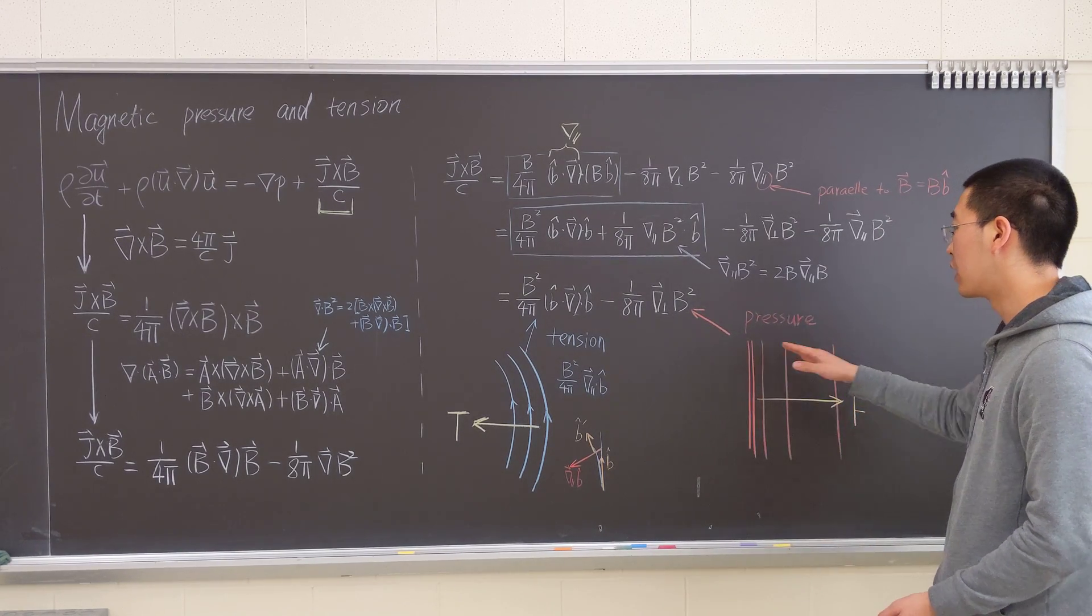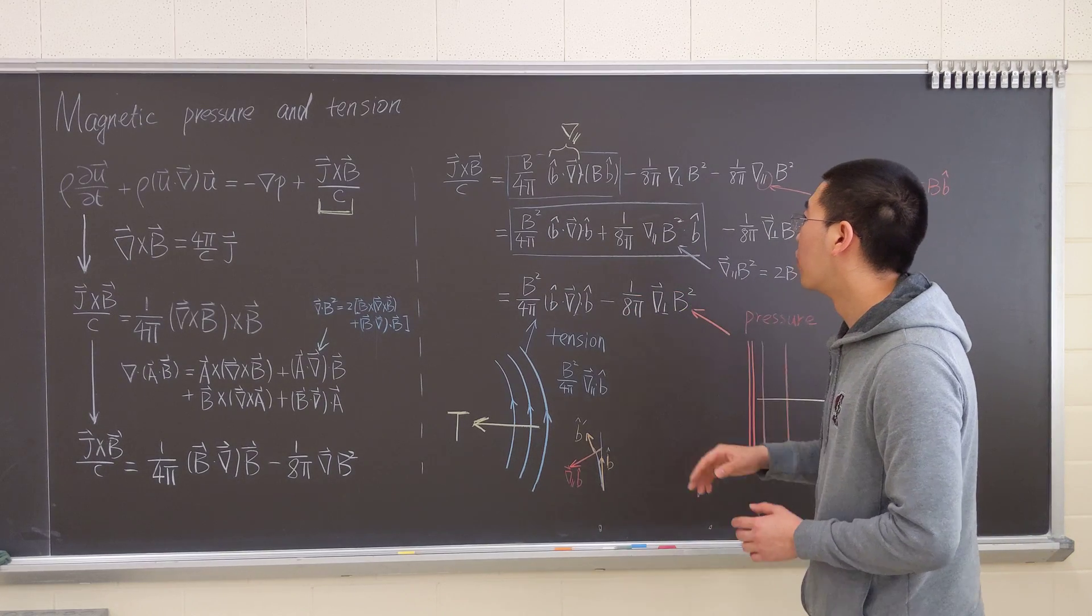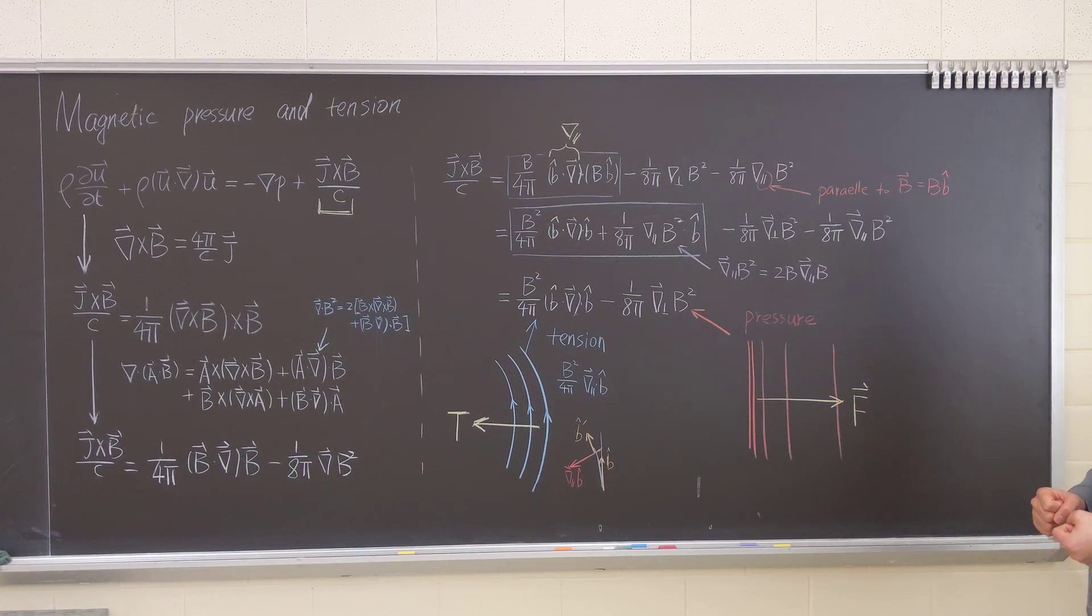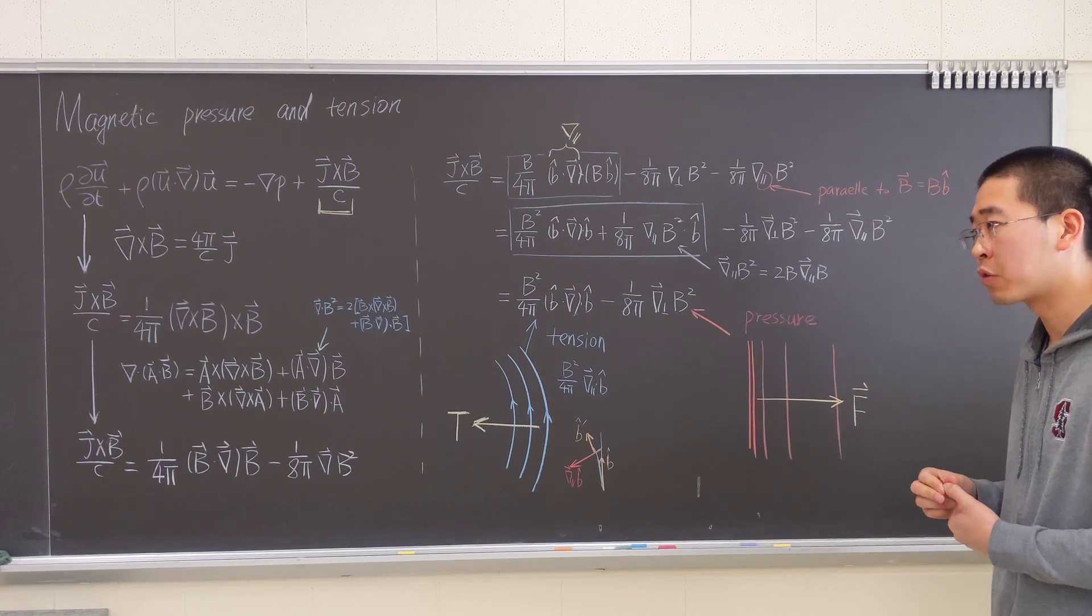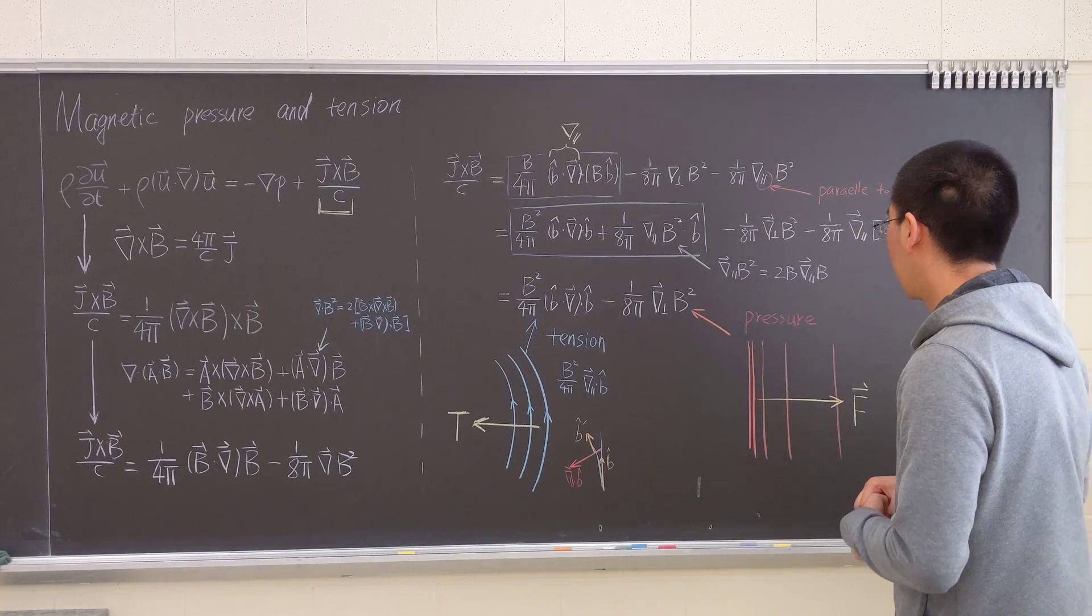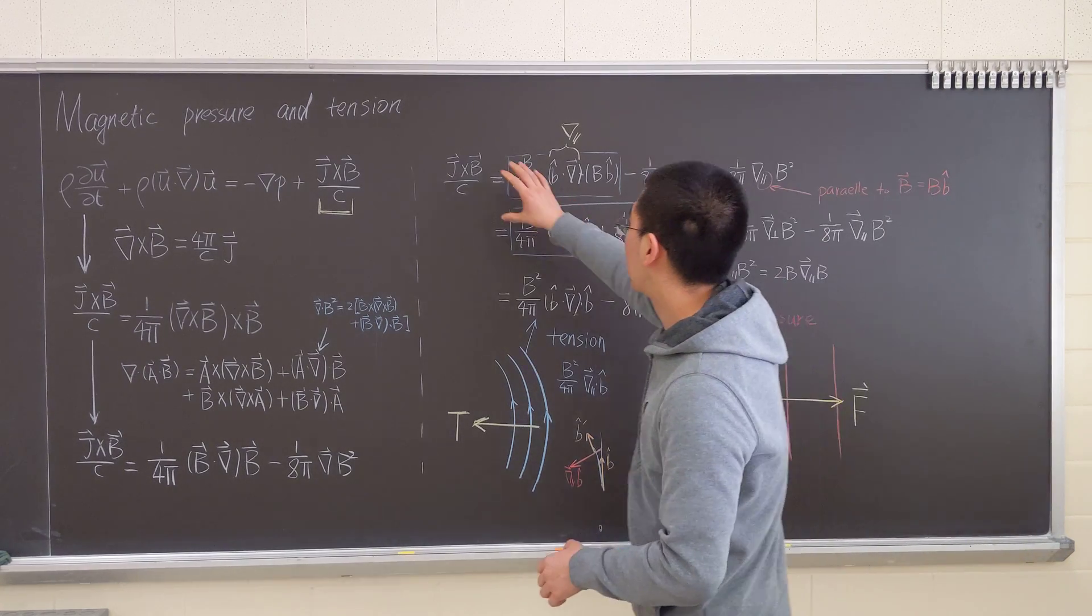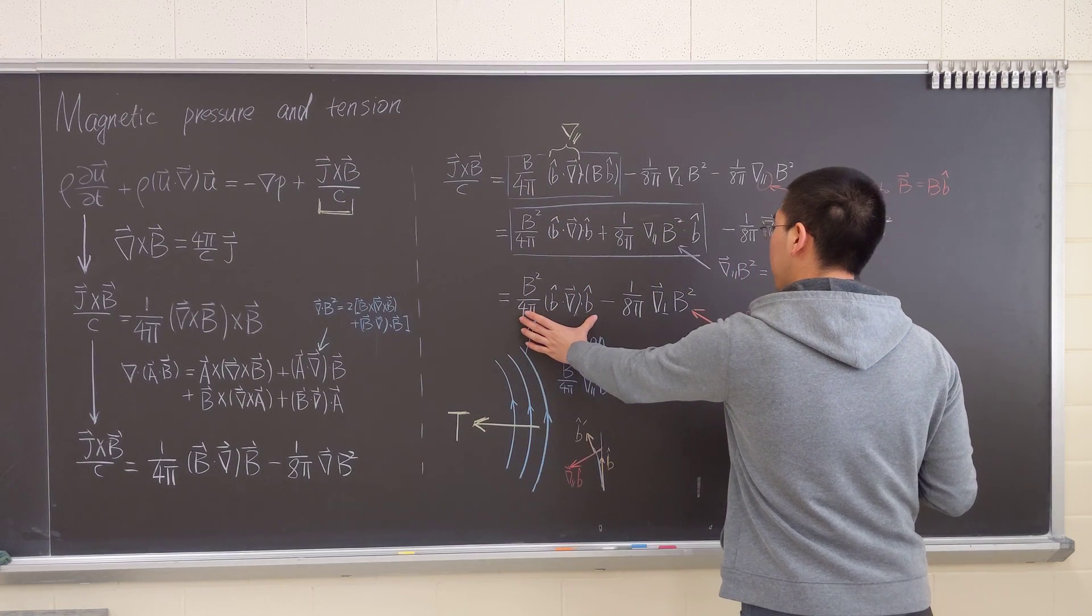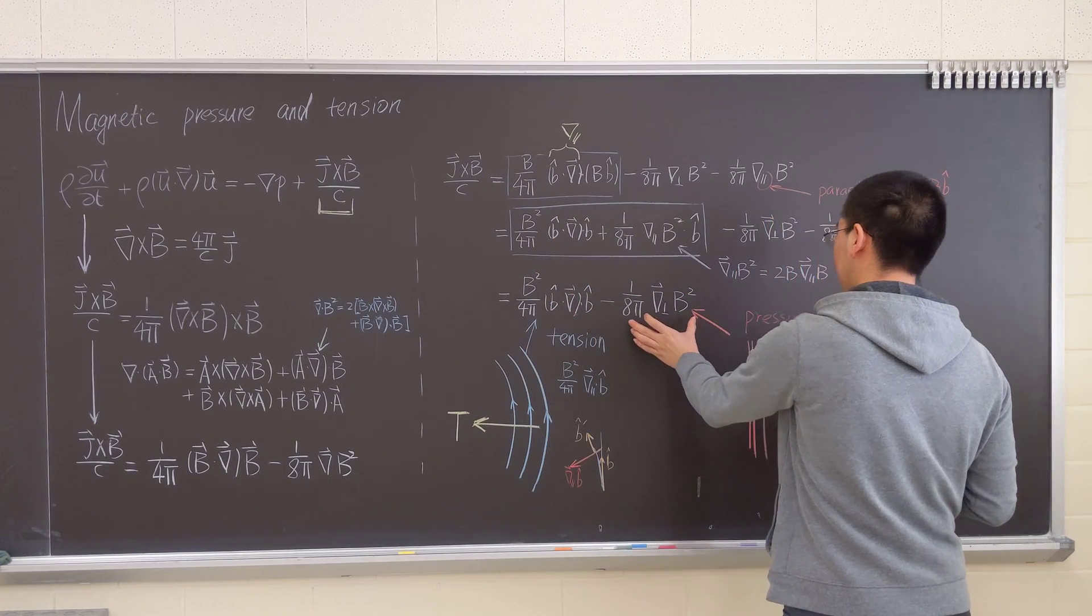Then this term will be in the future considered as a magnetic pressure. And magnetic pressure, pressure over magnetic pressure is beta. So it's a very important parameter in plasma physics. So this term will essentially become one tension term and a pressure term.